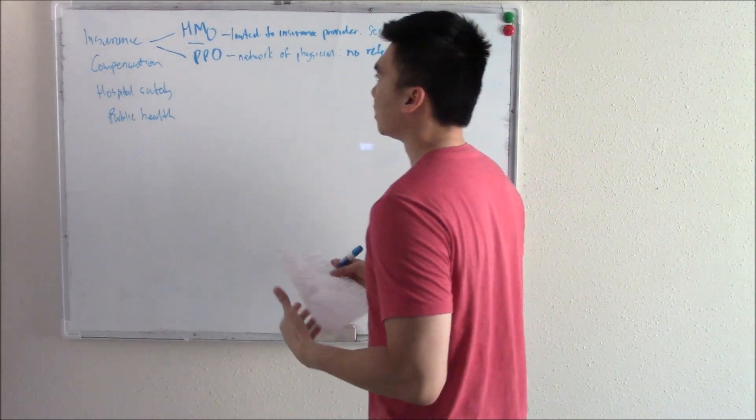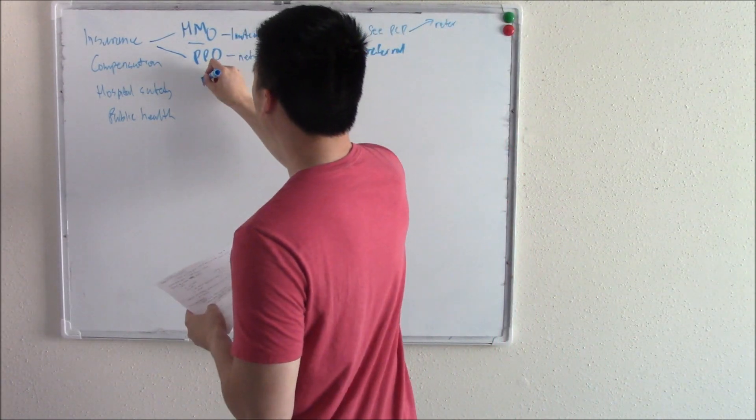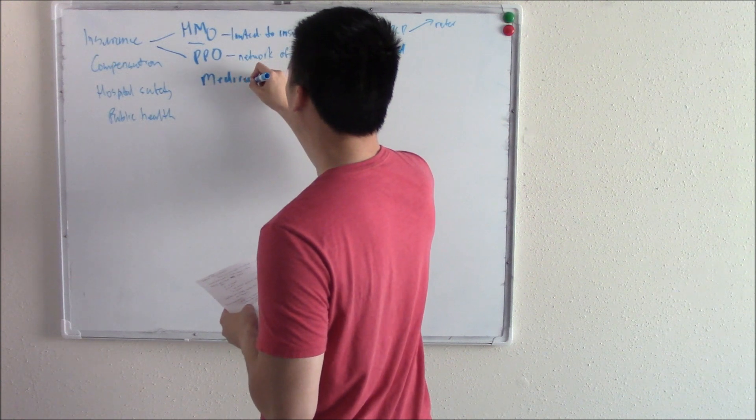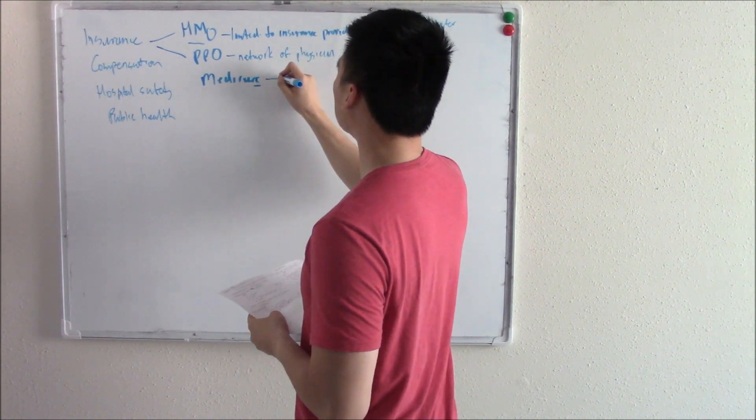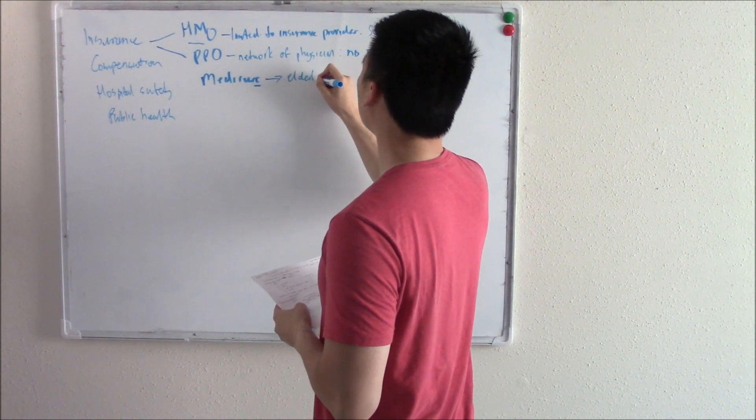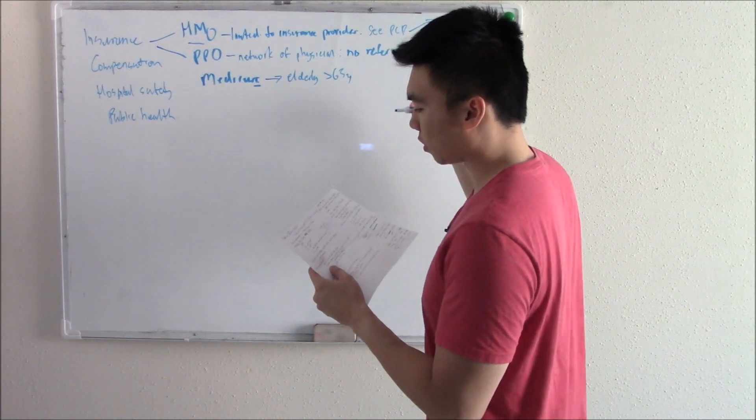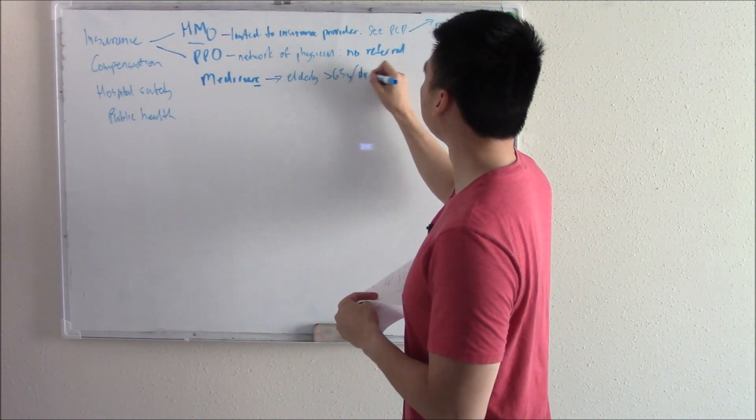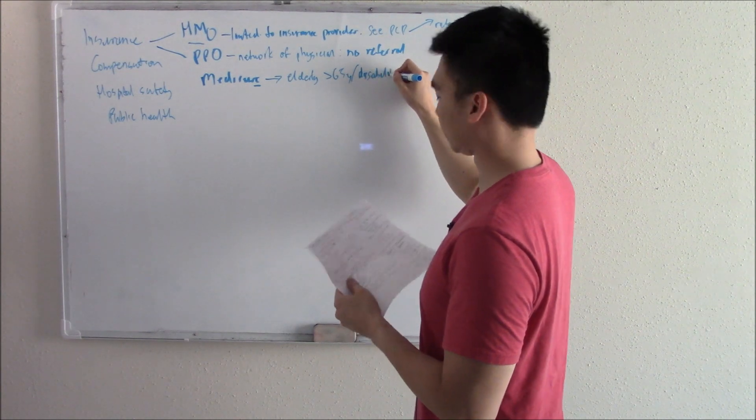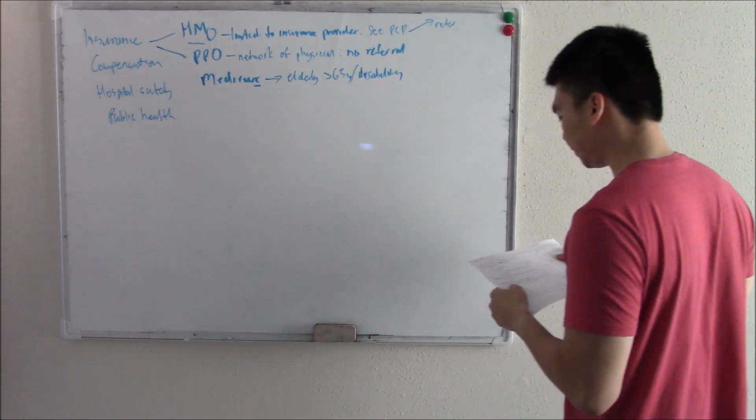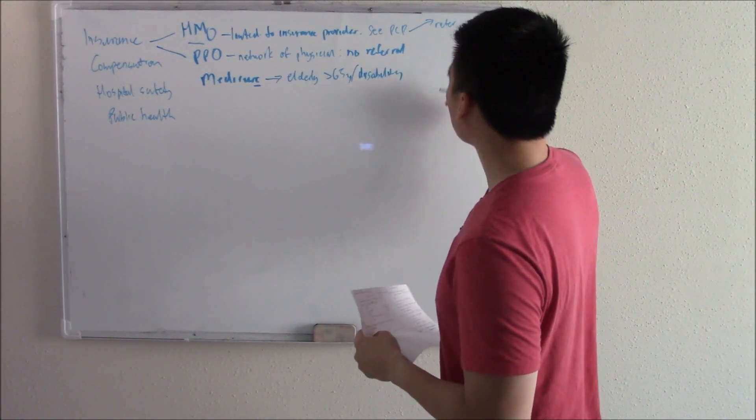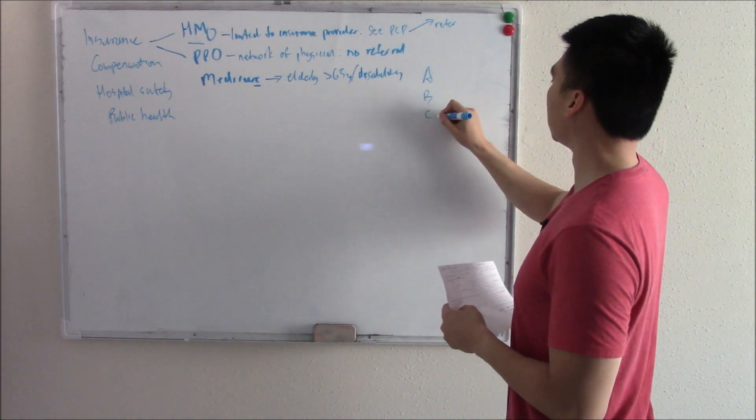Now there are some government health insurance programs like Medicare. I think E as in the elderly. This is a program for people over 65. Also for people that have a disability. And there are four parts to Medicare. A, B, C, D.